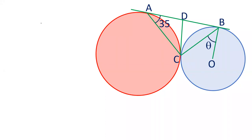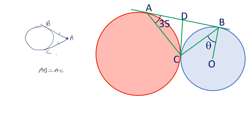Friends, there is a property of tangents: if two tangents are drawn from an external point to a circle, the lengths of the two tangents are equal. If the external point is A, and tangent touch points are B and C, then AB is equal to AC. These are tangents from an external point and they are always equal.